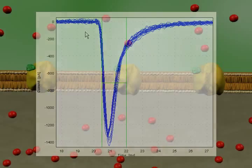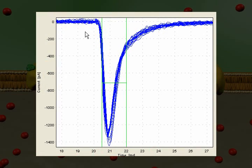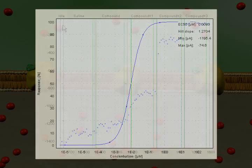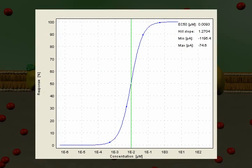Once the experiment is complete, the Q-Patch assay software quickly helps you go from raw data to current versus time plots to dose-response curves, complete with EC50 values.